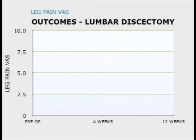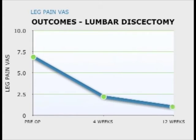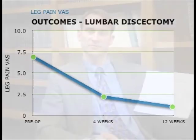The last graph is the visual analog scale for leg pain. As you'd expect, they had higher scores on this. Preoperatively, their average score was 7 out of 10 for leg pain. At the four-week point, it was 2 out of 10. And then at the final follow-up at three months, it was 1 out of 10 leg pain. Overall, a really successful procedure.